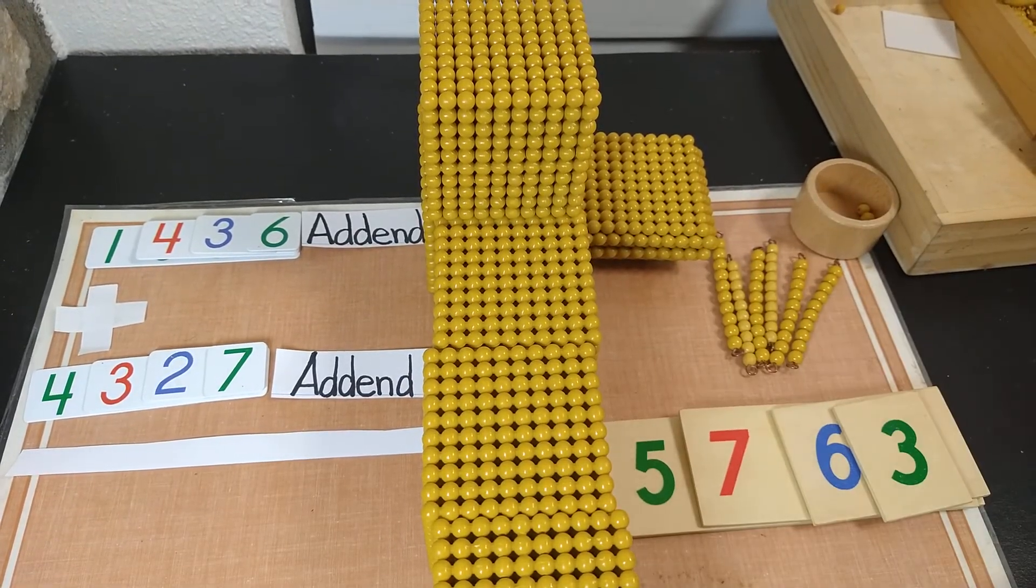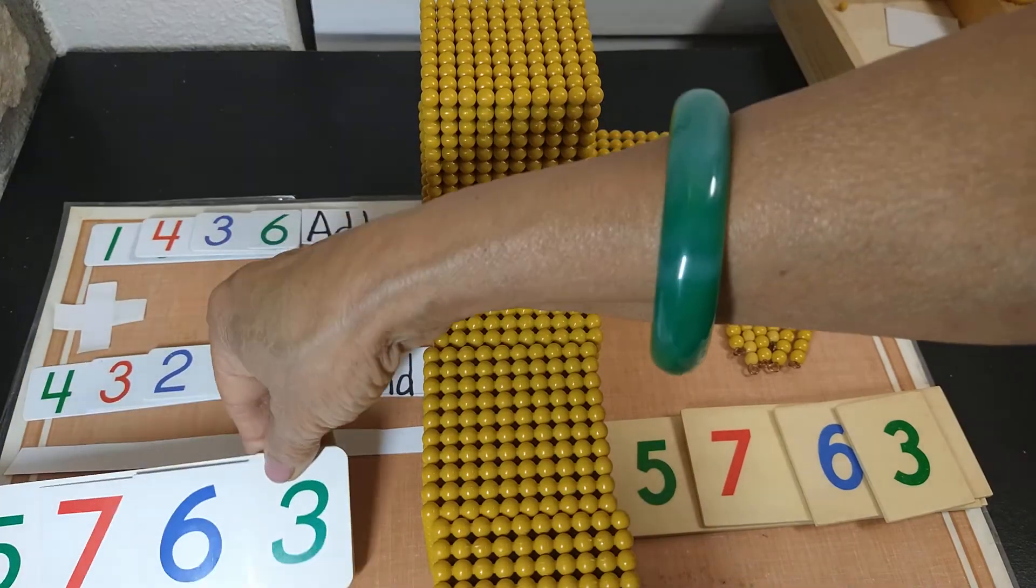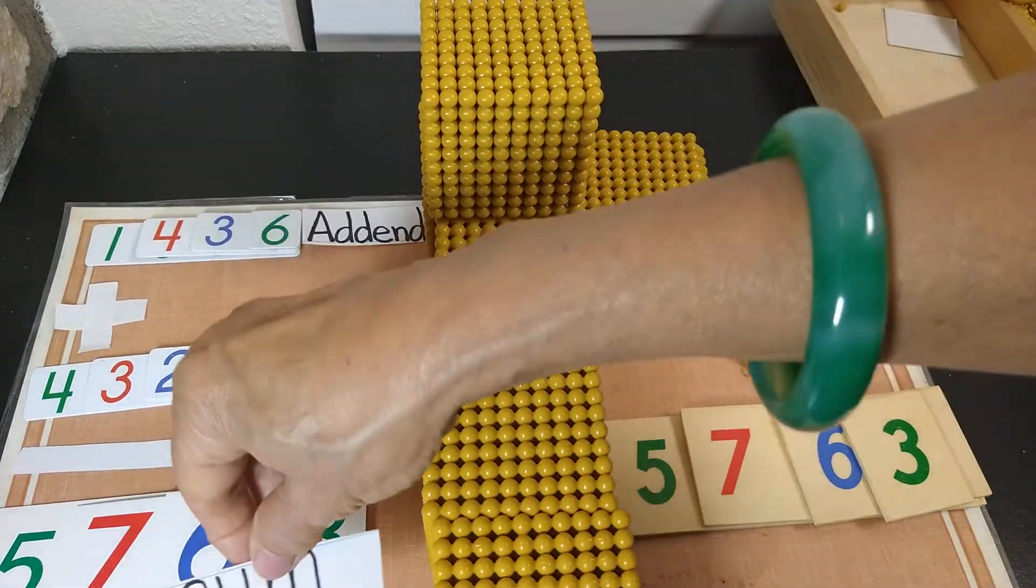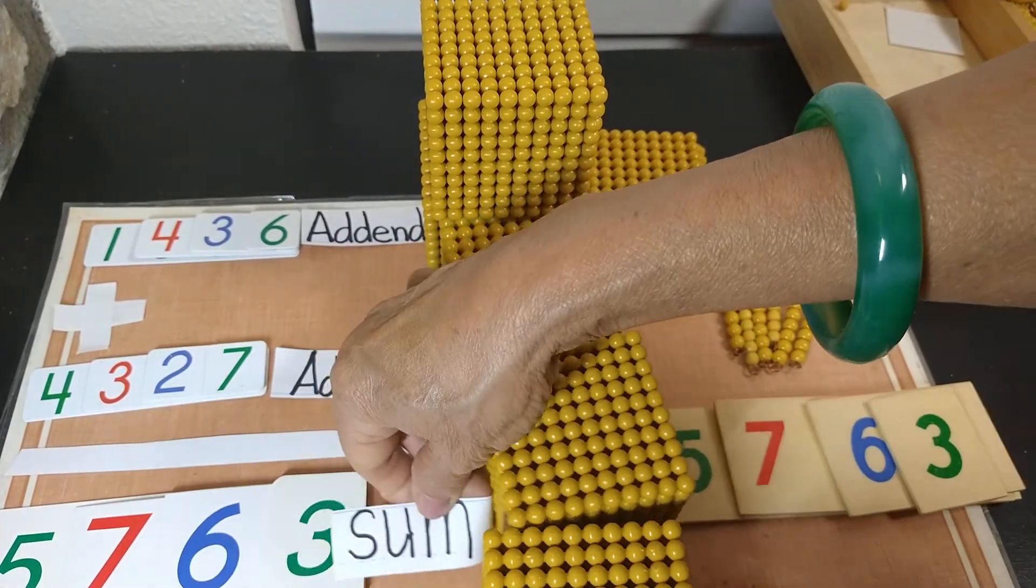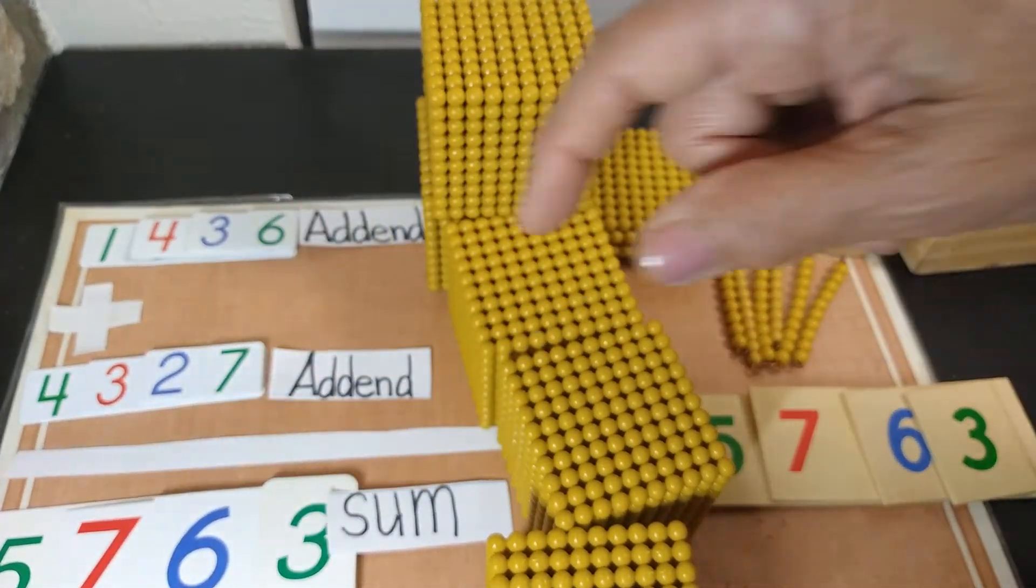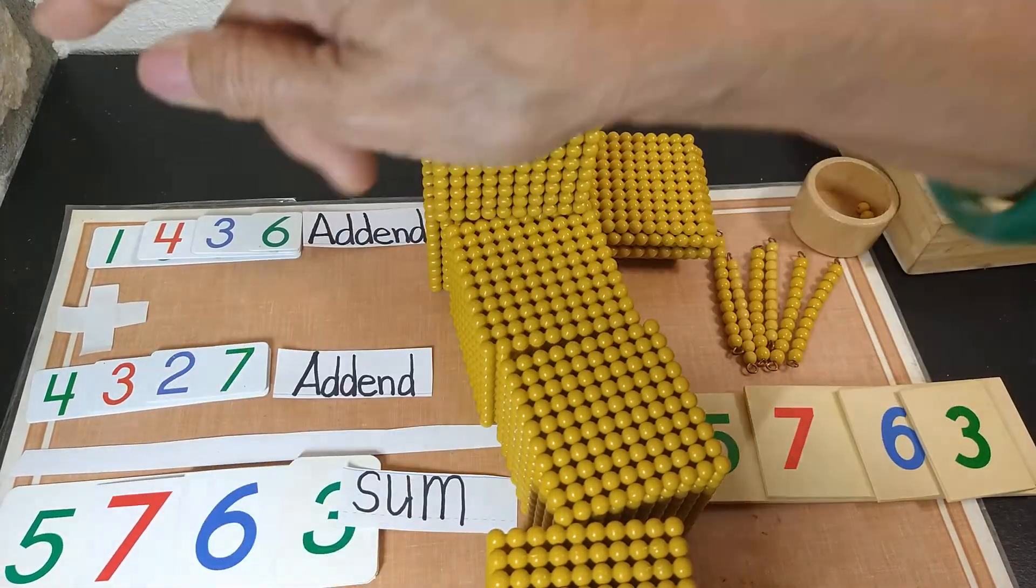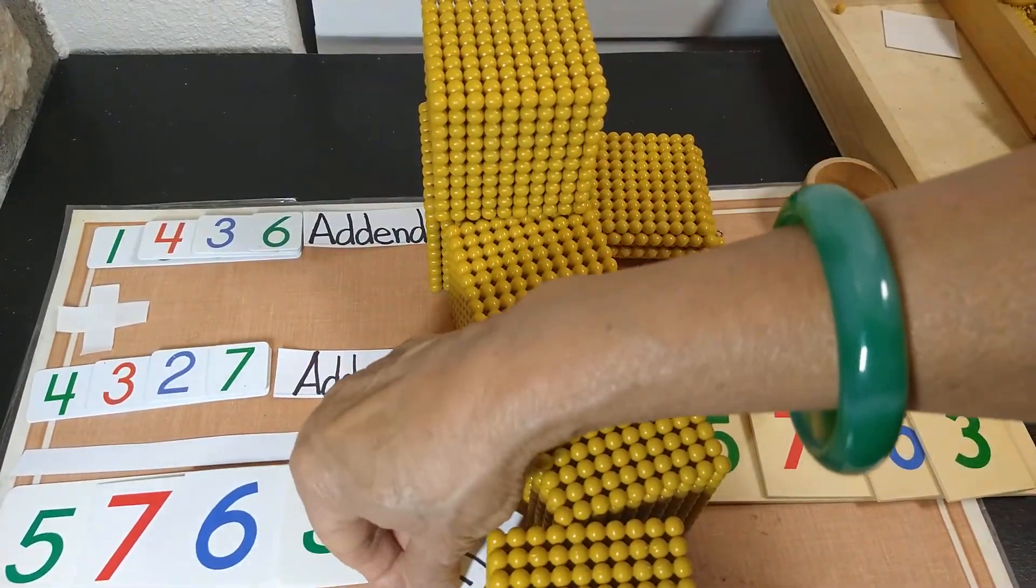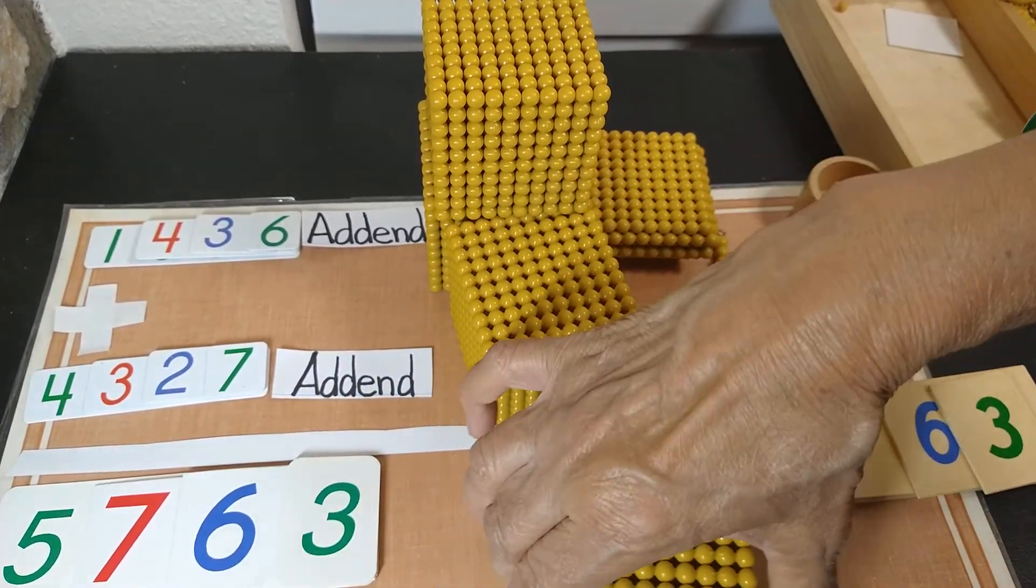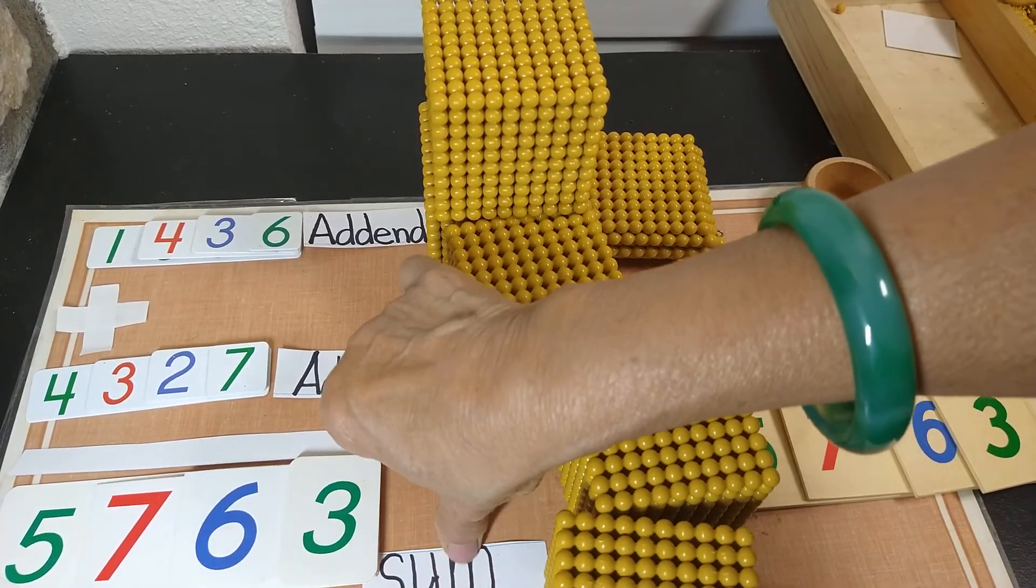So I have here cards also for that. This is called sum. So our sum is, let's read together. Five thousand, seven hundred, sixty-three. Okay. A little bit more space here so you could see. Okay.